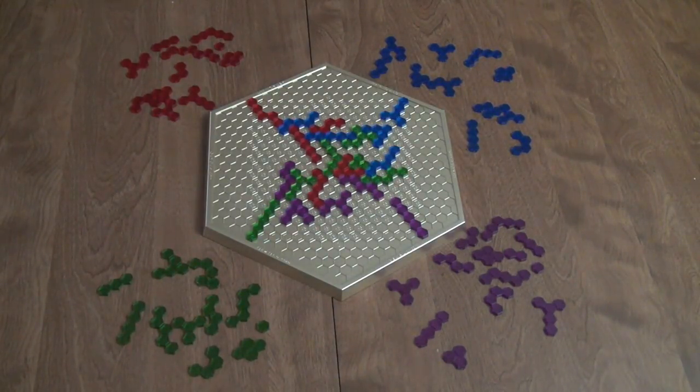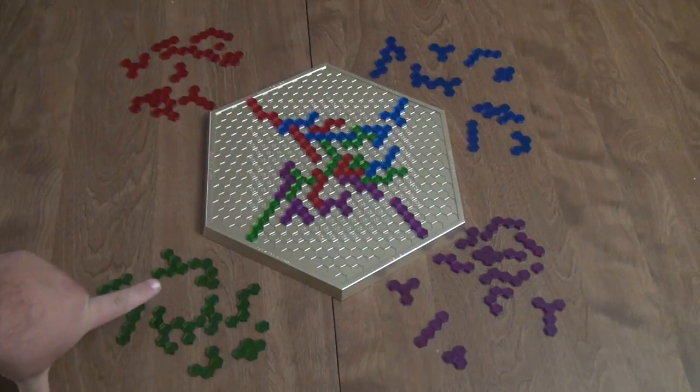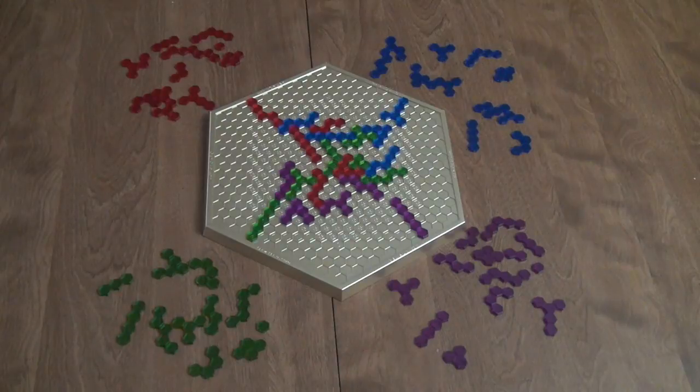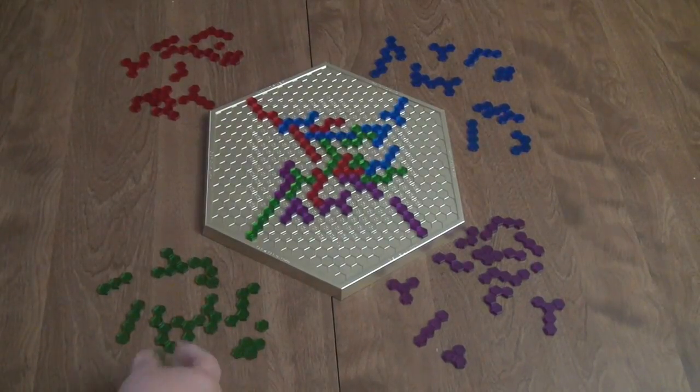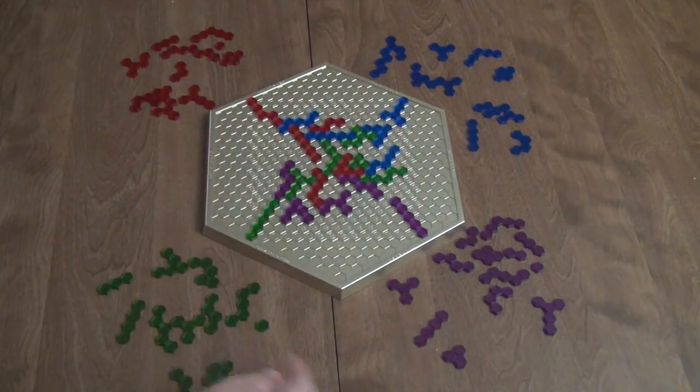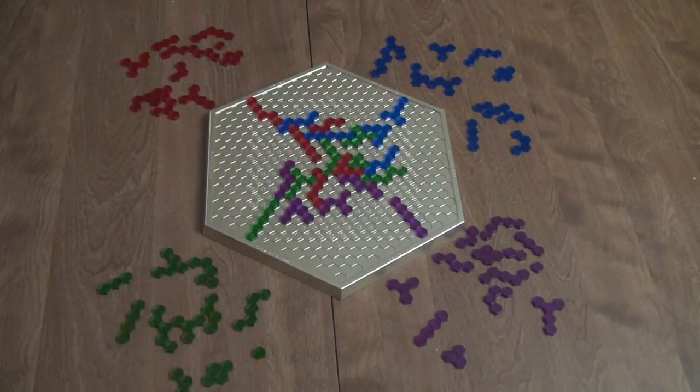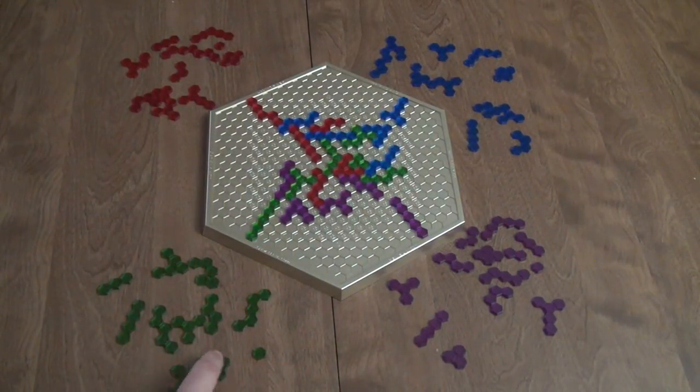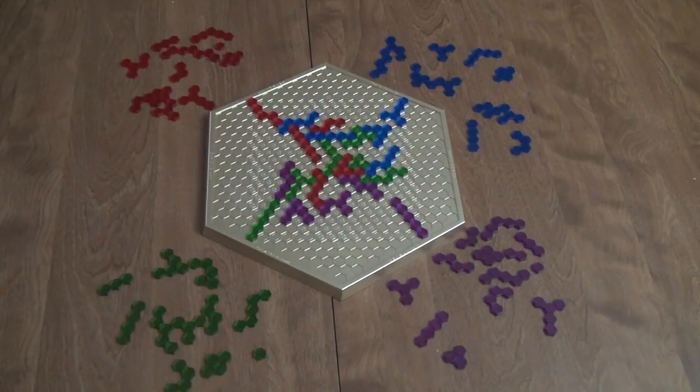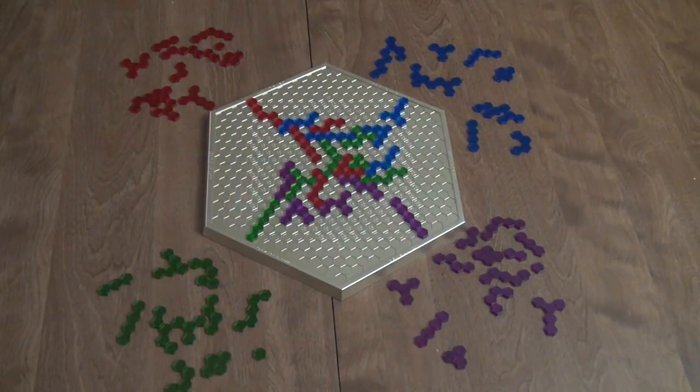Basically the rounds would continue until every person has passed, not being able to place any more gems onto the board. Once that happens, the number of gems that everybody has left is counted and the person who has the lowest number of gems left is the winner. For example, this one would be worth four. You would count one, two, three, four, five, six, seven, eight, and whoever has the lowest number after that wins.